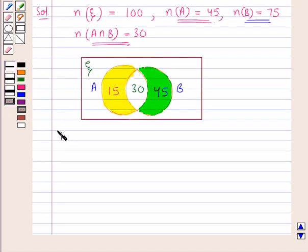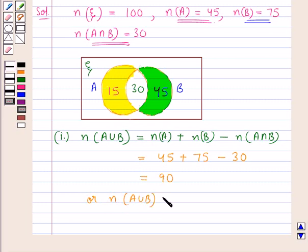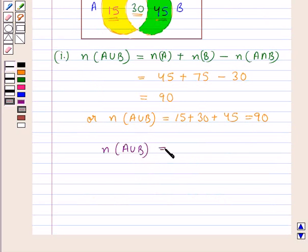Now let us find n(A∪B), which equals n(A) + n(B) − n(A∩B). That is 45 + 75 − 30 = 90. Alternatively, we can verify: 15 + 30 + 45 = 90. So the number of elements in A∪B is 90.